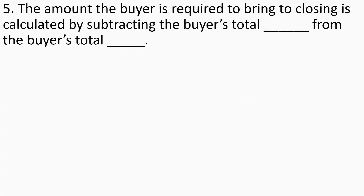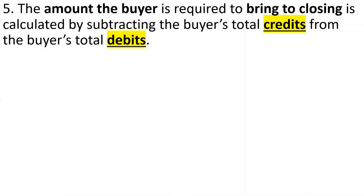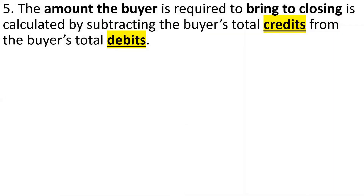Number five: The amount the buyer is required to bring to closing is calculated by subtracting the buyer's total credits from the buyer's total debits. Very simple.